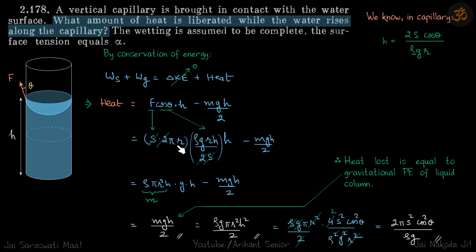F is S into 2πr cos θ. Because θ is not given to us, we are going to use our equation for the rise of capillary. Height H is given by 2S cos θ by ρgr, where r is the radius of capillary. From here we can write cos θ is ρgHr by 2S.